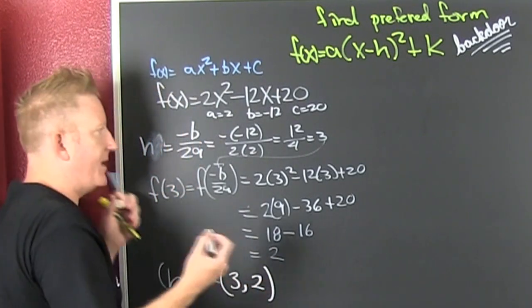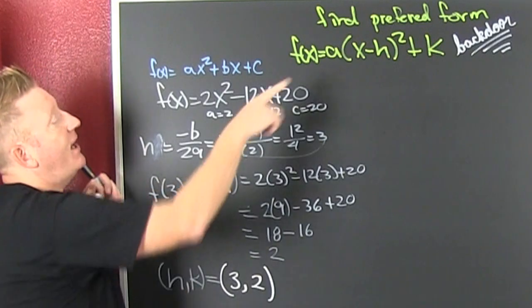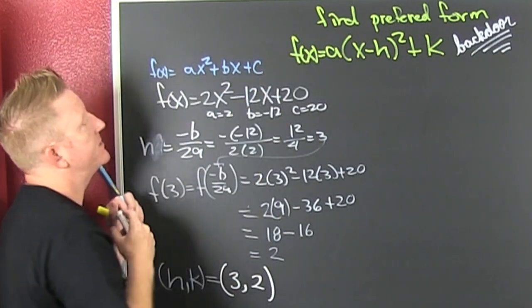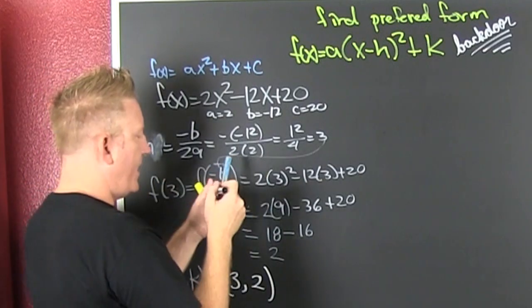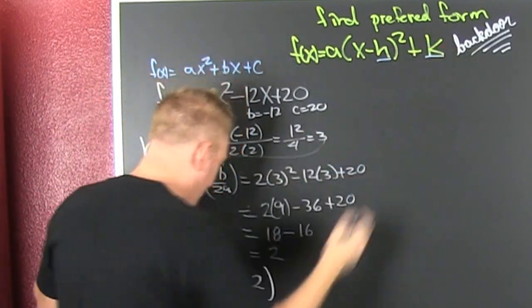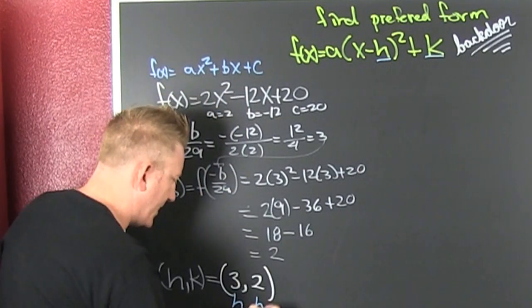So that's my vertex. Now what do I do? I have that special form, that vertex. I need to find this form. So I need to know my a. I found my h, I found my k. They're right here. That's my h, that's my k.